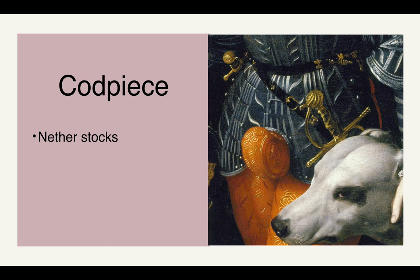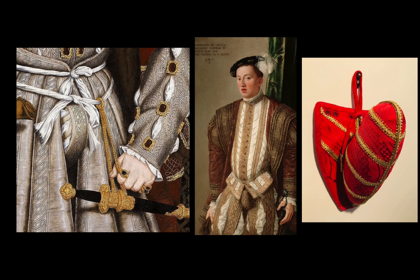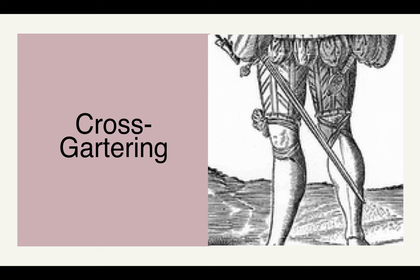The codpiece becomes very fashionable in this period — excessively decorated and padded in all sorts of shapes, really accentuating that area of the body. It's a short-lived trend that doesn't last super long, but one we will never forget. Cross-gartering is not the leg bandaging we saw in earlier centuries. This involves a garter that starts below the knee, crosses behind the knee, and ties just above. It's more typical to see regular gartering just above the knee.